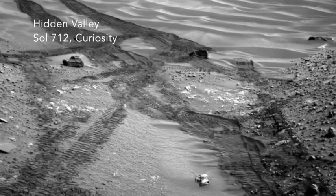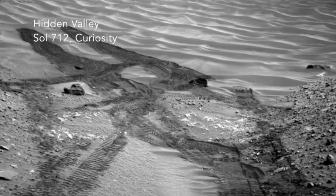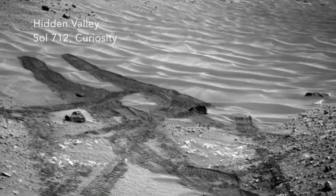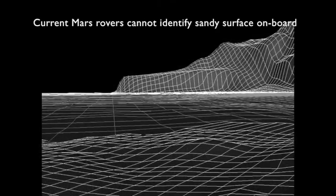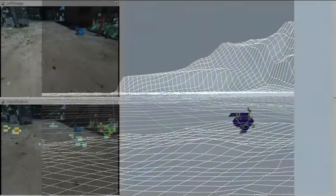Curiosity experienced excessive slip on a sandy surface in Hidden Valley. Nevertheless, current Mars rovers lack the onboard capability to identify non-geometric hazards like sand.